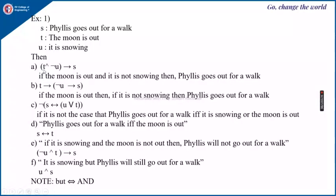Then the compound statement T and not of U implies S is nothing but: if the moon is out and it is not snowing, then Phyllis goes out for a walk.